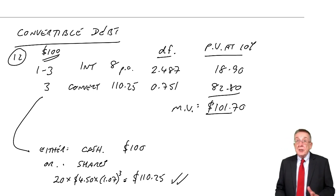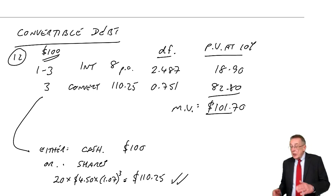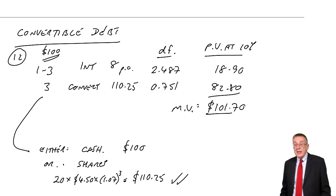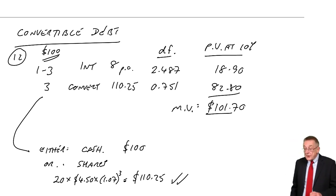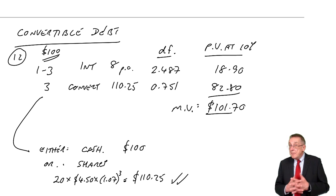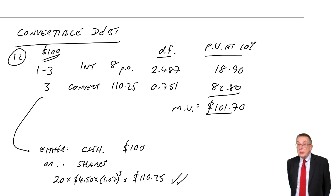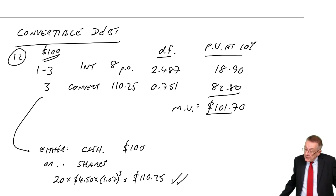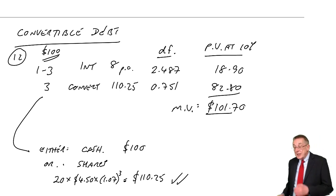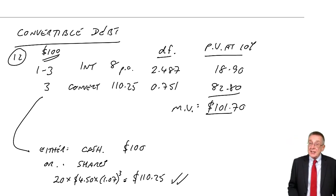Two things to note. First, today's market value is based on what they're expecting as of today — $8 a year for three years and then shares worth $110. But that can change over time, because the decision about whether to take shares or cash won't actually be made until three years' time. At that point, they'll look to see what has happened — maybe shares are worth more, or maybe less and they take cash. Today's market value is simply based on today's expectations.